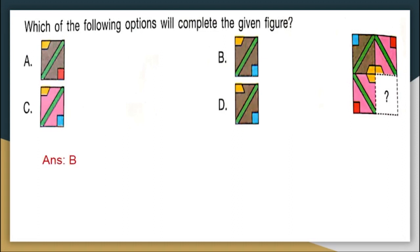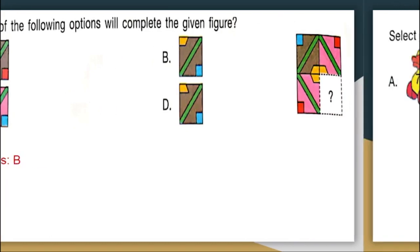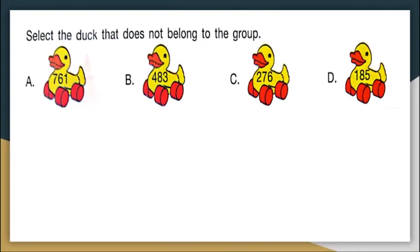Moving on to the next question: select the duck that does not belong to the group. There are 4 ducks given here and there is a number printed on each duck. The first duck has the number 761, the second one has 483, the third one has 276 and the fourth one has 185. Which is the odd one out among these? Definitely it is option C, 276, because 276 is an even number while all the other numbers given are odd numbers.